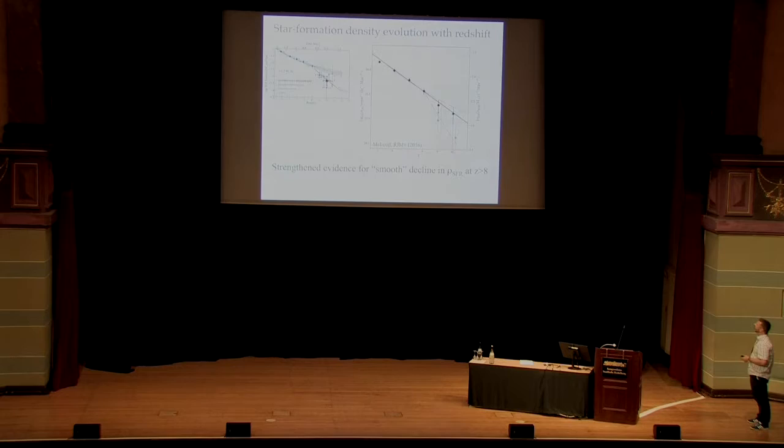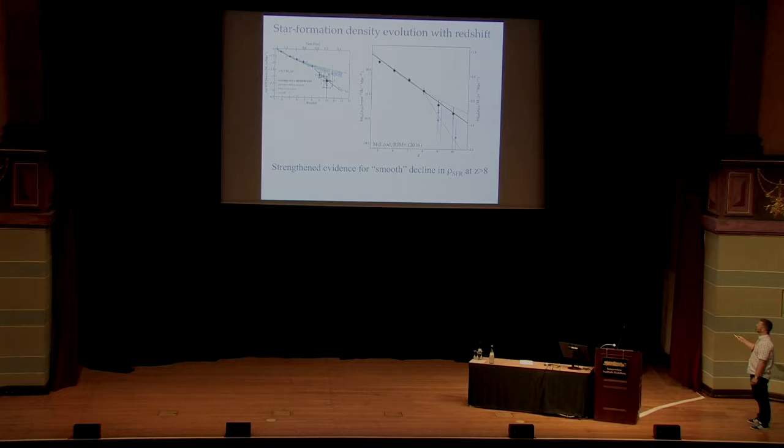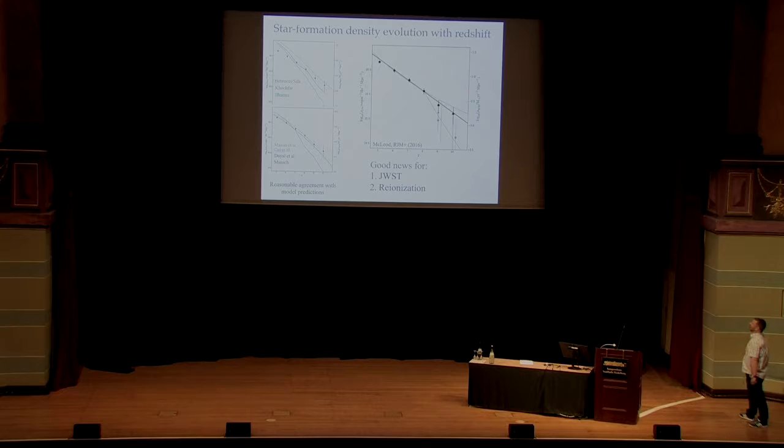And what we find is that actually the fall off in the star formation rate density is pretty smooth, as we suspected previously, but were unable to demonstrate. So this red line here and the black data points are our latest estimate. And you can see that going through redshift eight, nine, and even 10 with a large error bar, things hold up pretty well. There's nothing particularly dramatic happening here, which is in reasonable agreement with the majority of theoretical expectations. So here's our data over a bunch of the latest models in the literature. Most of them fall off in a very comparable way to what the data shows. One or two exceptions don't. This is the Illustris model here, which may be struggling for resolution for this type of object. But most of the models are actually in reasonable agreement with what we find in the data.